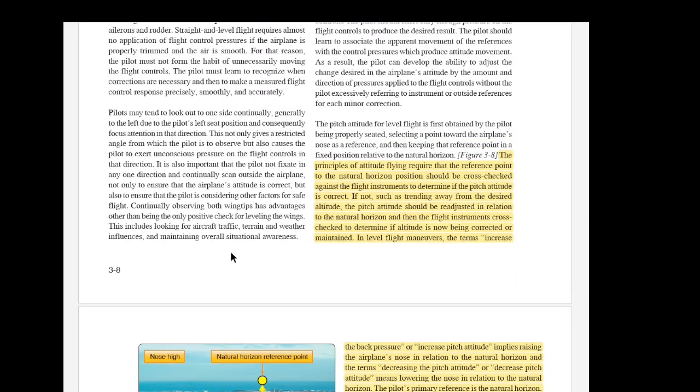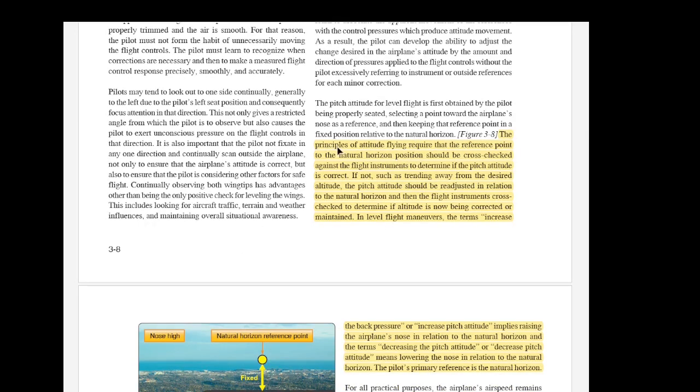The principles of attitude flying require that the reference point to the natural horizon position should be cross-checked against the flight instruments to determine if the pitch attitude is correct. Again, the natural horizon outside the aircraft is the primary indicator of where you are in relation to level, your attitude, your pitch or your bank or whatever. And that then tells you whether your instruments are correct or not. If not, such as trending away from the desired altitude, the pitch attitude should be readjusted in relation to the natural horizon and then the flight instruments cross-check to determine if altitude is now being corrected or maintained.